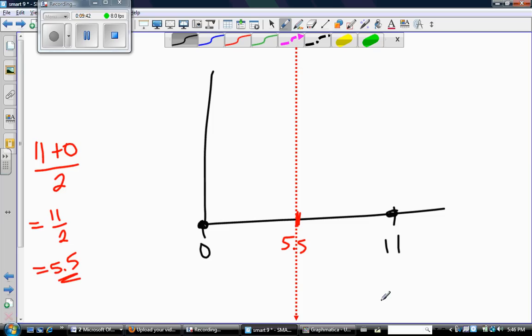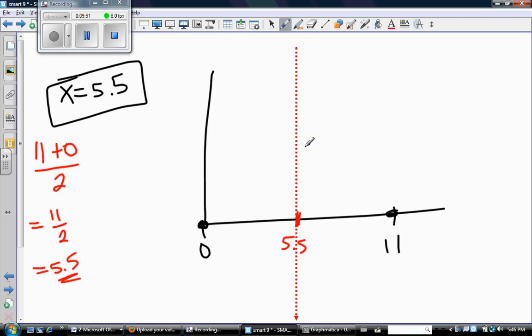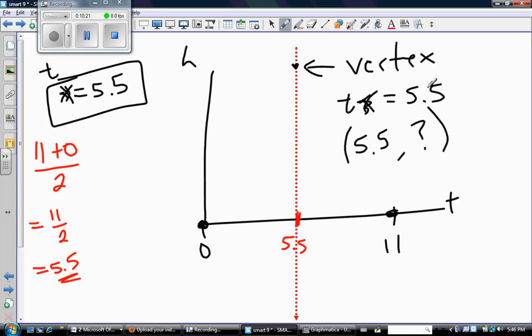You should know from class that the midpoint represents your axis of symmetry. Your parabola is going to be perfectly symmetrical about this folding line. What's important is that your vertex is somewhere on this line. So your vertex must have a t value of 5.5 and h equals something. Let's fix this: t equals 5.5, and that means we can use this information to find the vertex.